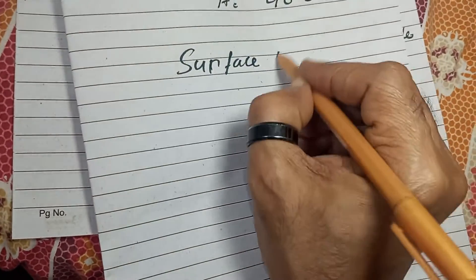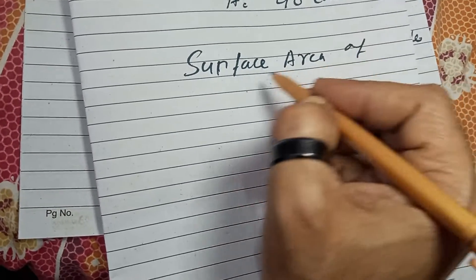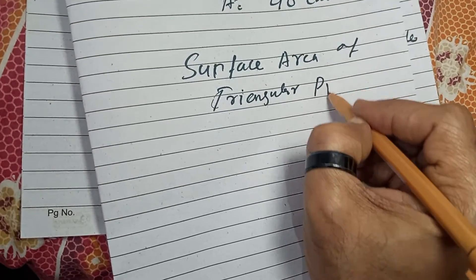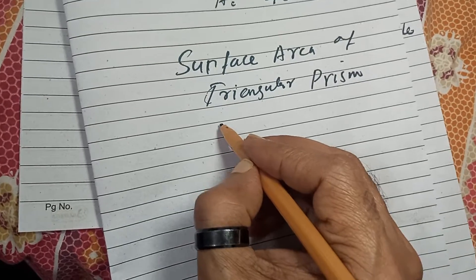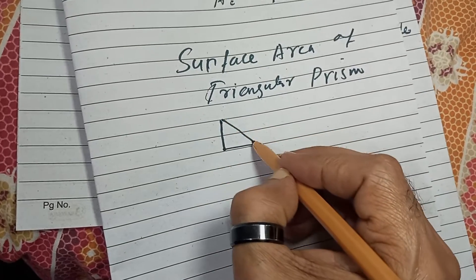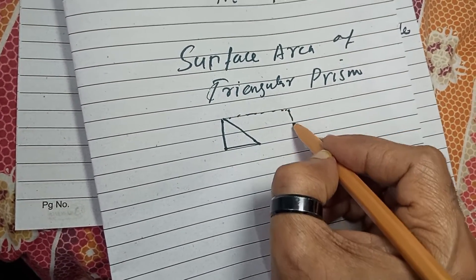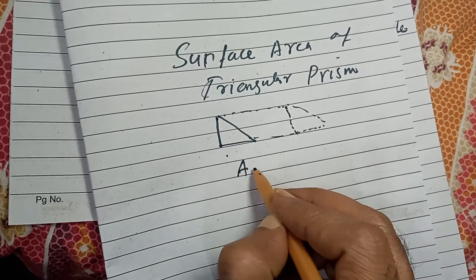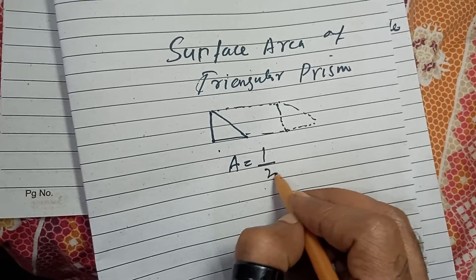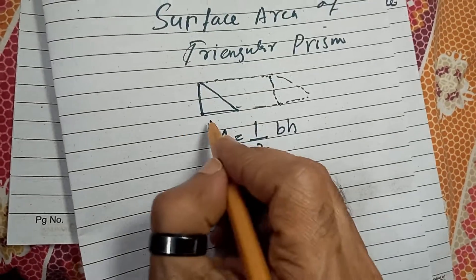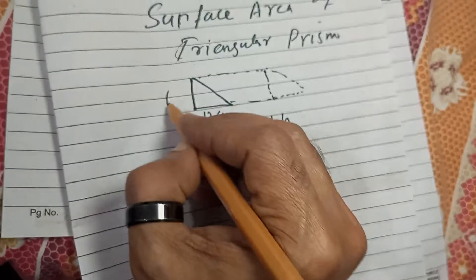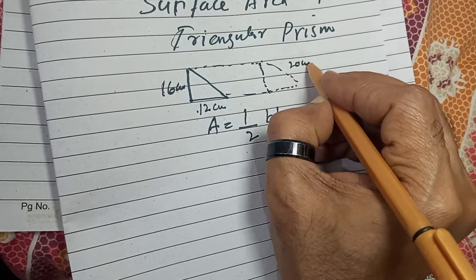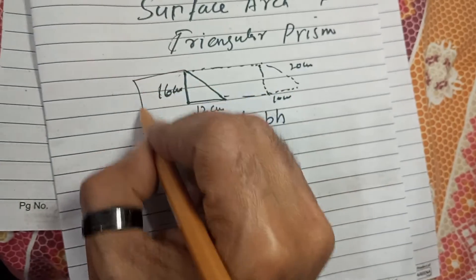This is the area of rectangle. Moving to our next problem to find the surface area of triangular prism. Suppose again we know for finding this surface area we have this formula. If the base is 12 centimeter and 16 centimeter is the height, for example the length is 20 centimeter, we're going to find the surface area.